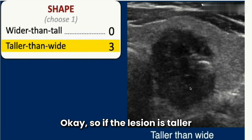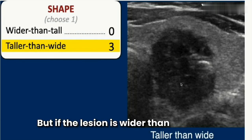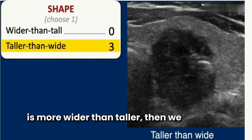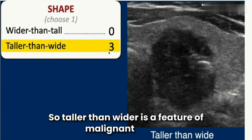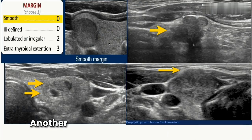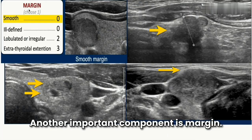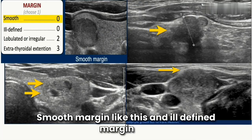The next component is shape. In this image we can see the lesion is taller than wider. If the lesion is taller than wider, we give three points. If the lesion is wider than taller, we give zero points. Taller than wider is a feature of malignancy and scores three points.